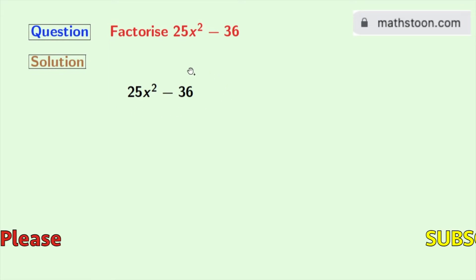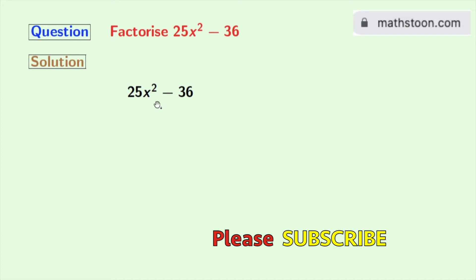Our given expression is 25x² - 36. To factorize this expression, we will firstly express each of these terms as a square of something. To do so, we will write 25x² as (5x)² and 36 as (6)².